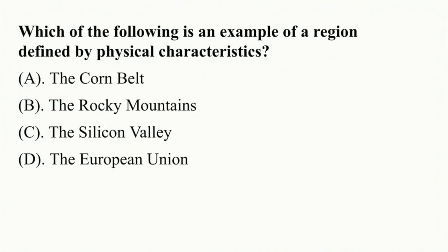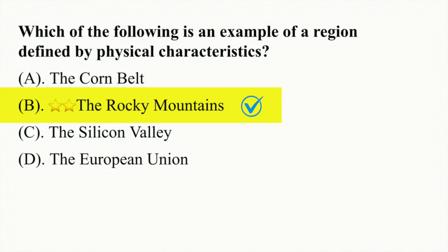Which of the following is an example of a region defined by physical characteristics? A corn belt, though it is an agricultural region, doesn't really have physical characteristics. The Rocky Mountains definitely have physical characteristics and continue across many states with those same characteristics. Silicon Valley is much more of an economic region, and the European Union is also an economic and monetary situation. So the correct answer is B, the Rocky Mountains.